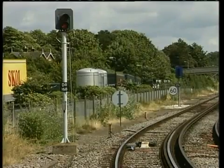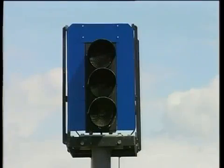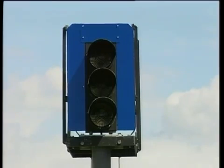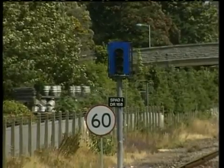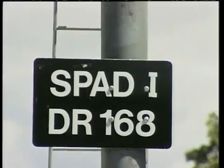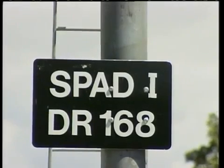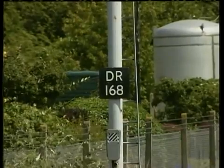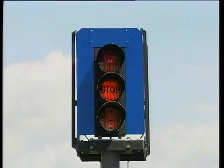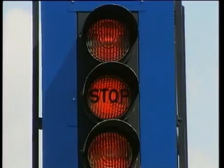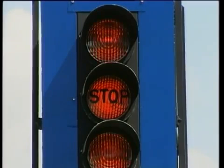Let's begin by looking at the equipment. The indicator takes the form of a standard three-aspect signal head which normally has all three aspects unlit. The backboard is of a reflectorised blue material. The identification plate, which bears the inscription SPAD-I, also bears the identification of the signal to which it refers — in this case, DR-168 signal at Dorchester South. When activated, the SPAD indicator will display flashing red aspects at top and bottom, while the centre aspect will display a steady red over which the word STOP appears.